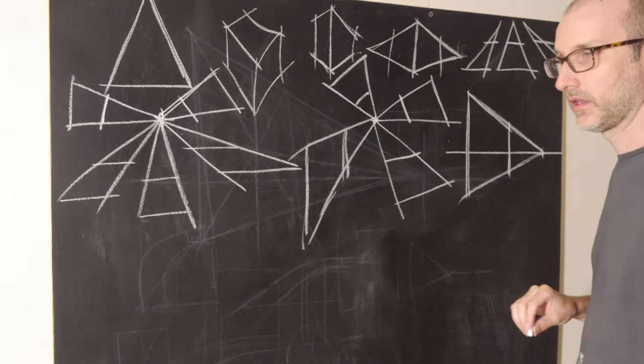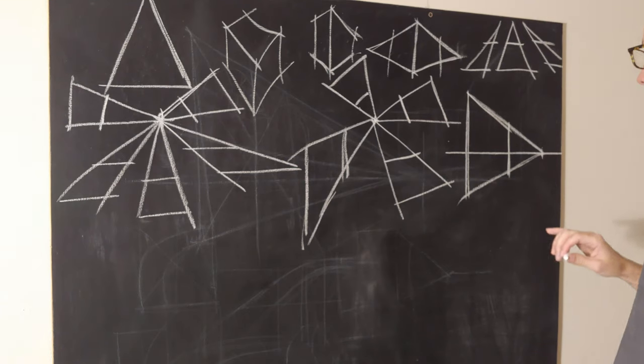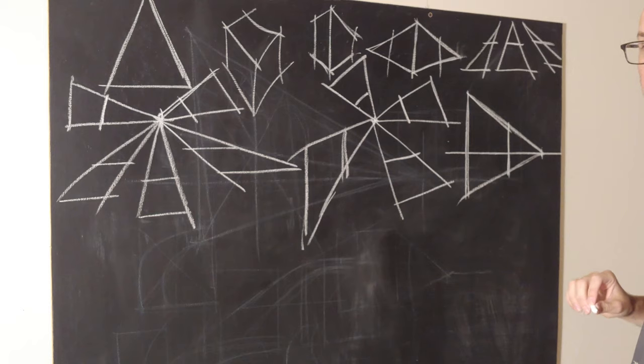Whenever we're drawing in perspective, as long as we're not doing anything too funky, we only have three types of lines. We have your horizontal line, your vertical line, and your diagonal that's going to form the triangle.